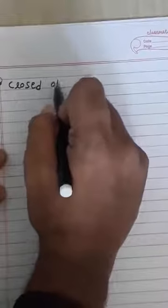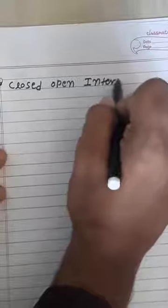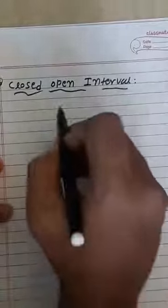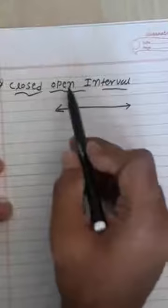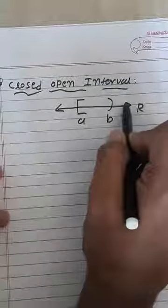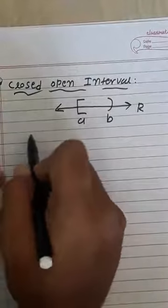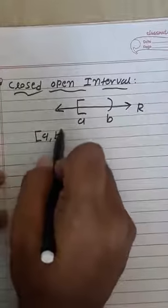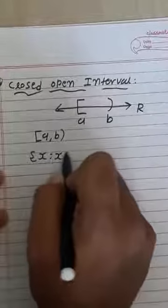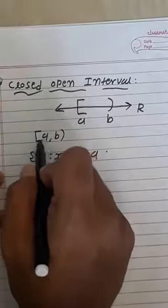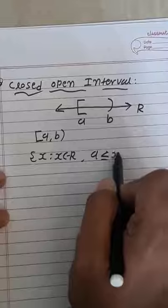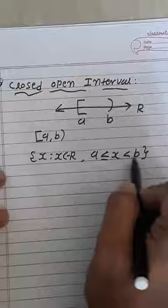The fourth interval is closed-open interval. In this interval, the first position is closed and the second position is open. We write it as [A, B). The number line is the real line. In set builder form: {X | X belongs to R, A ≤ X < B}. At position A, closed form is present so we write A ≤ X. At position B, open form is present so we write strictly less than B.